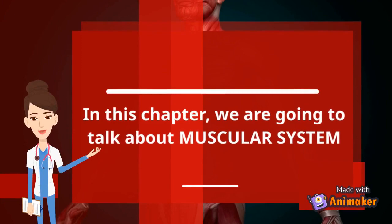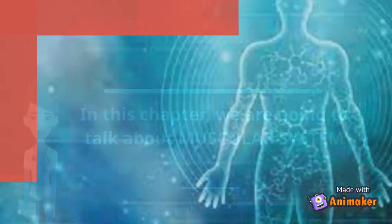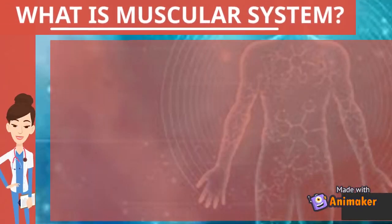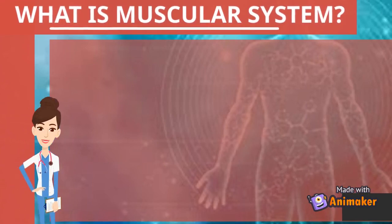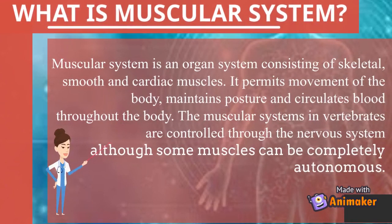In this chapter we are going to talk about the muscular system. The muscular system is an organ system consisting of skeletal, smooth, and cardiac muscle. It permits movement of the body, maintains posture, and circulates blood throughout the body. The muscular system in vertebrates is controlled through the nervous system, although some muscles can be completely autonomous.